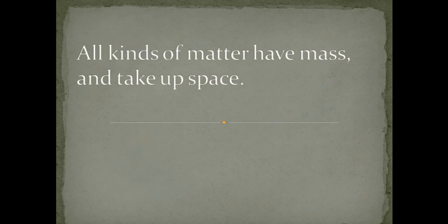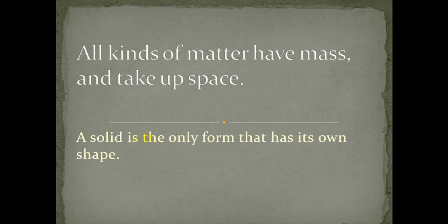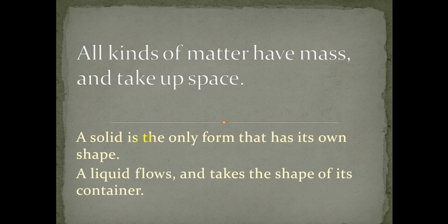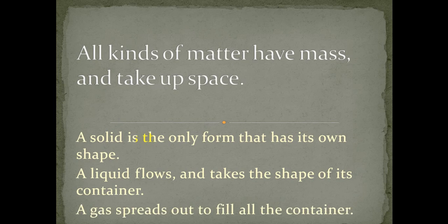Let's summarize what we said today. Everything around us is matter, and it has mass. Mass means the amount of matter in an object, and matter takes up space. We have three kinds of matter: the first is a solid, which is the only form that has its own shape; the second is a liquid, which flows and takes the shape of its container; the third is a gas, which spreads out to fill all the container. Thank you, grade one, for listening — see you next time. Goodbye!